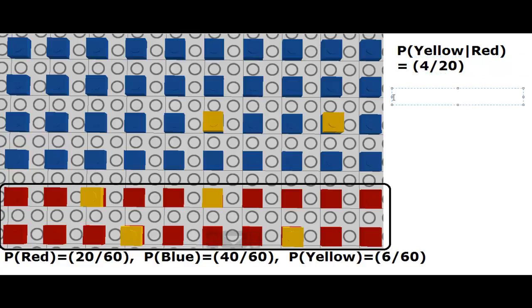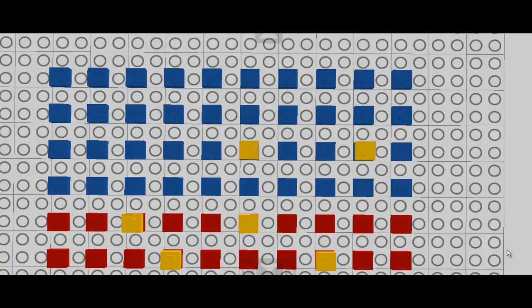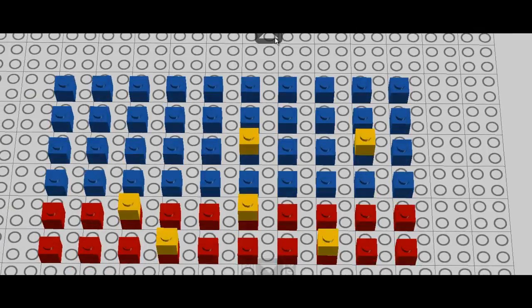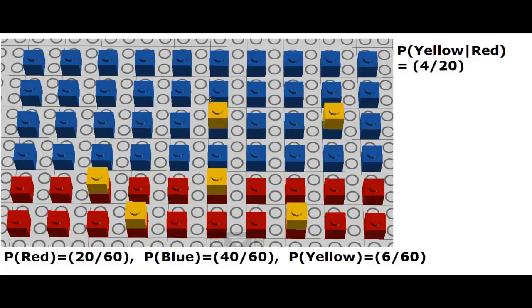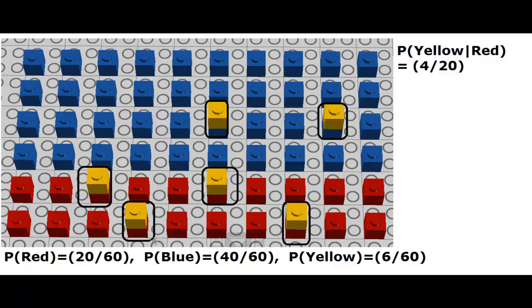Now, let's go to the other side. We would like to get the probability that the color of the brick is red, given that we have a yellow brick. So now we go back to our board, and notice that we have 6 yellow bricks, and 4 of them have the color red in them, and 2 of them have color blue.